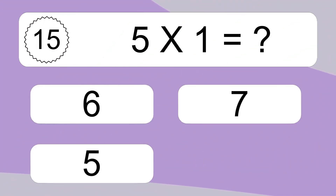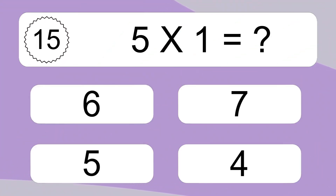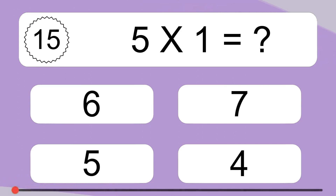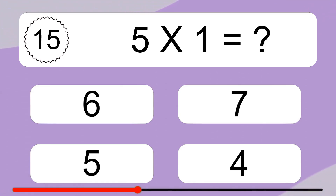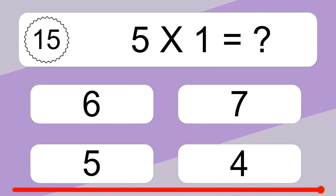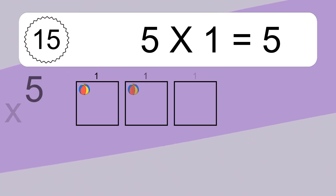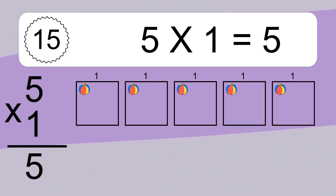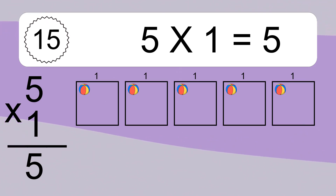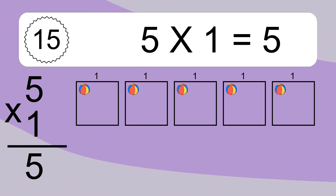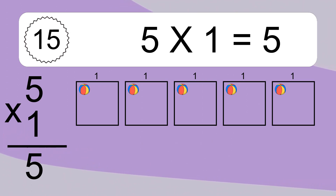5 times 1 equals what? 5 times 1 equals 5. We have 5 boxes, and each box has 1 colorful ball inside. If you count all the balls in all the boxes together, you will have 5 times 1 balls. This equals 5 balls.